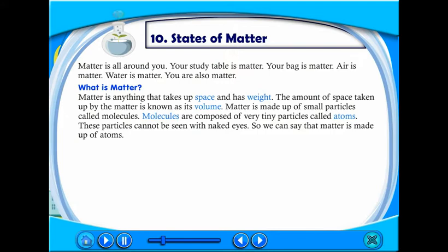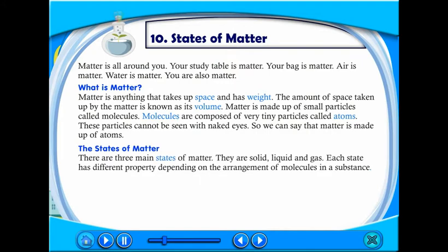So we can say that matter is made up of atoms. The states of matter: there are three main states of matter. They are solid, liquid, and gas. Each state has different properties depending on the arrangement of molecules in a substance.